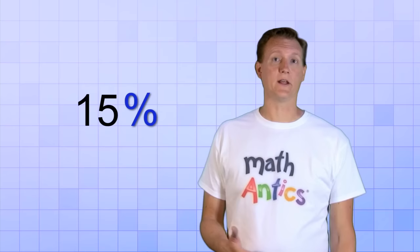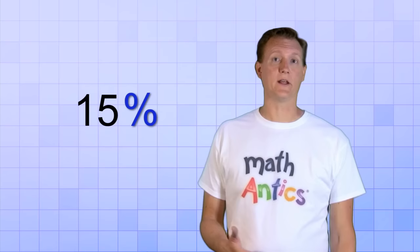Whenever you see this symbol after a number, it means the number is a percent. It's really a fraction with 100 on the bottom, but it's just being written in this more compact form. Like this number 15 here. It's got the percent sign after it, so we read it as 15 percent. And because a percent is really a fraction that always has 100 as the bottom number, we know that it means the same thing as 15 over 100.